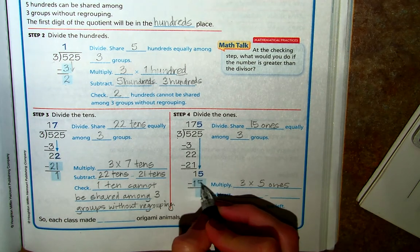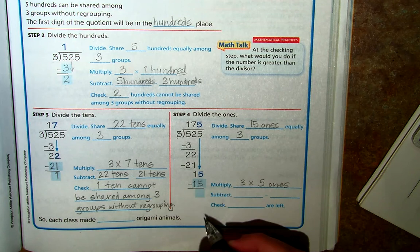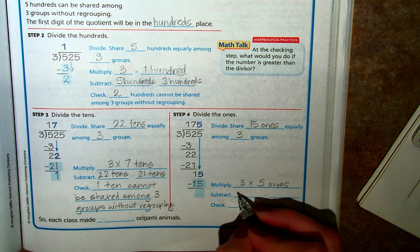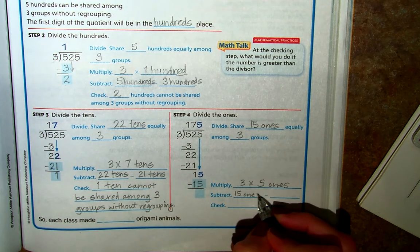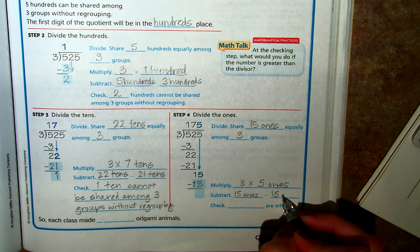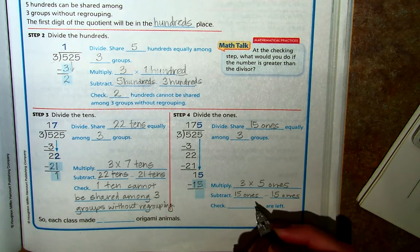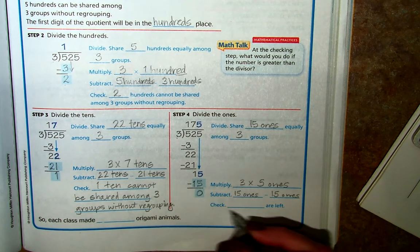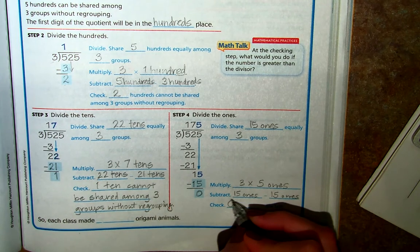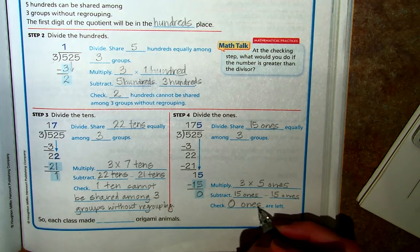And what we get is 15. And then 15 ones minus 15 ones leaves us with 0. And we do our check.